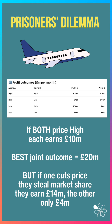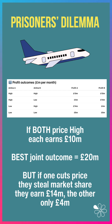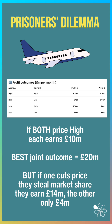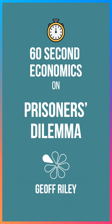But if one cuts the price, they steal market share — they earn £14 million while the other firm earns only £4 million. So the equilibrium is they both charge a low price and make only £6 million profit each.